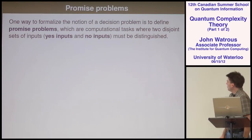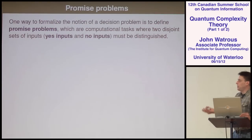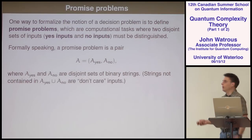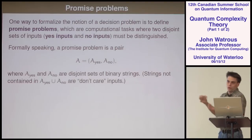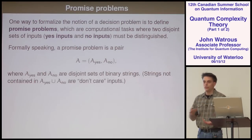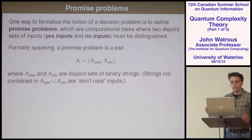More precisely, we can formalize these computational problems using the terminology of promise problems. You have an output that's supposed to be zero or one, and you can think of inputs as being categorized into two categories: yes inputs or no inputs. We also allow certain inputs we don't care about. Formally, a problem A has two disjoint sets — inputs for which the answer is yes and inputs for which the answer is no — and strings not in either set are don't-care inputs.